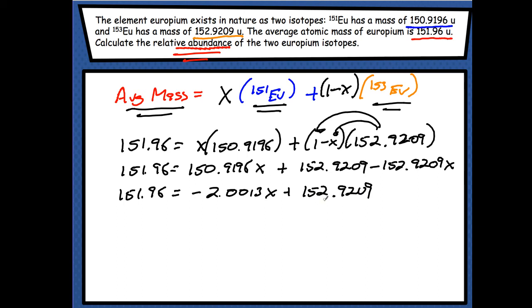Now, I'm going to subtract both sides. I'm going to carry this number here. So negative this number. 152.9209 minus 152.9209. So, I'm going to get a negative number over here. I'll plug this in my calculator. 151.96 minus 152.9209. And I get a negative 0.9609.